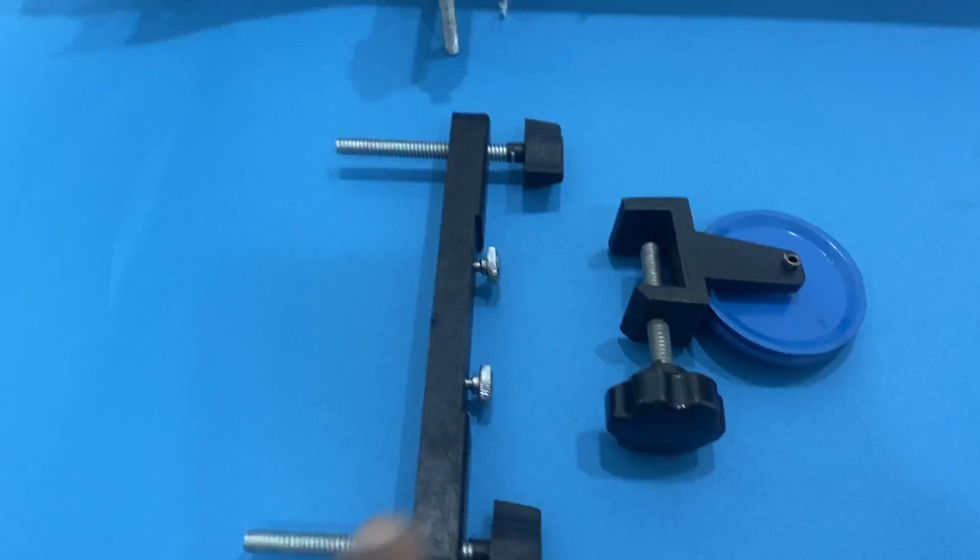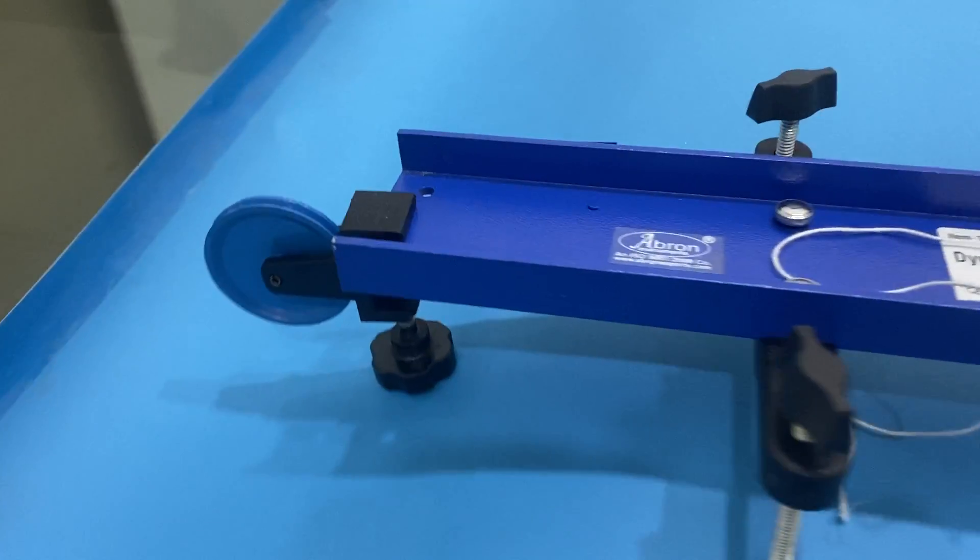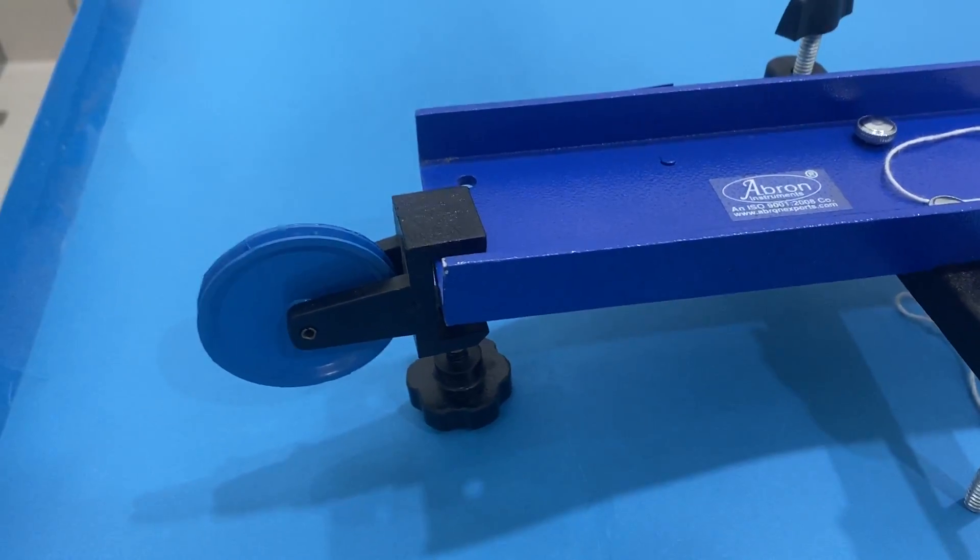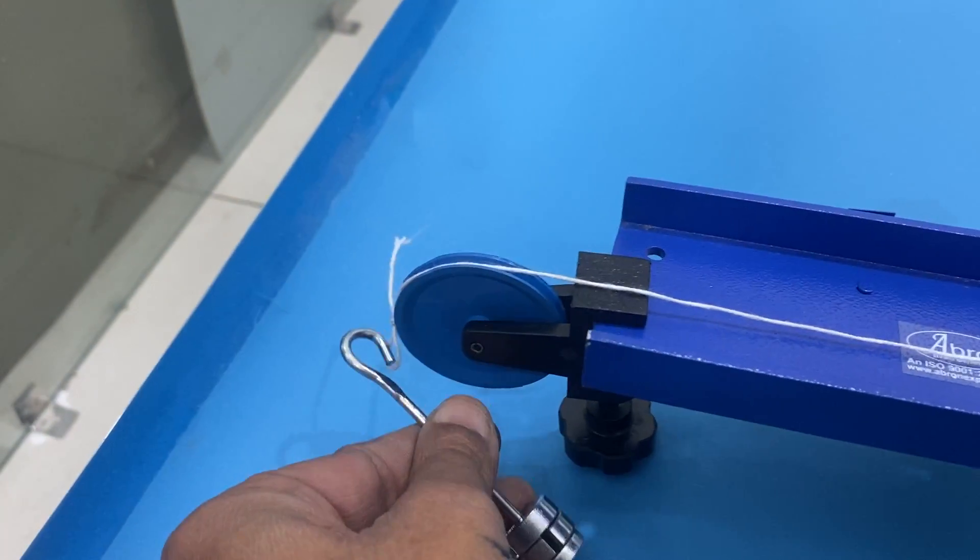This piece which is on the air we have fitted by the screws and one tube. This pulley is fitted so that you can put the thread and put the weight, and here you hang the thread.